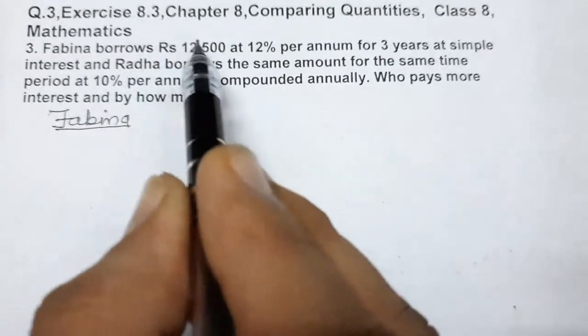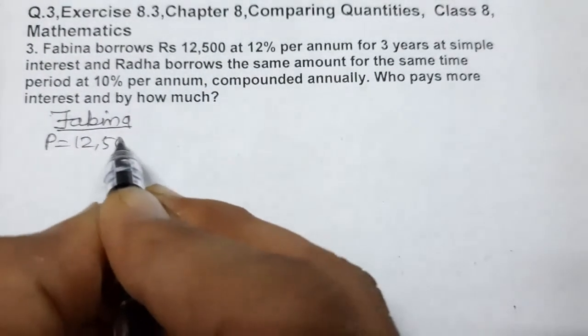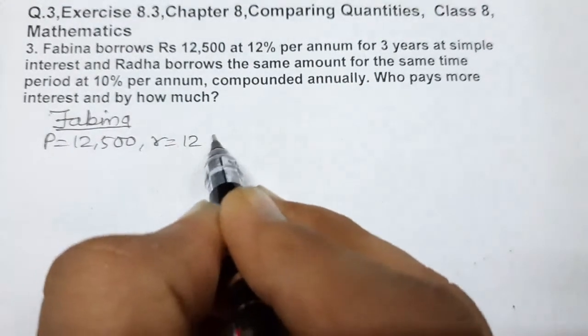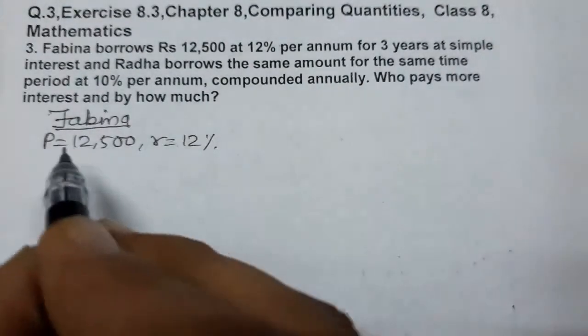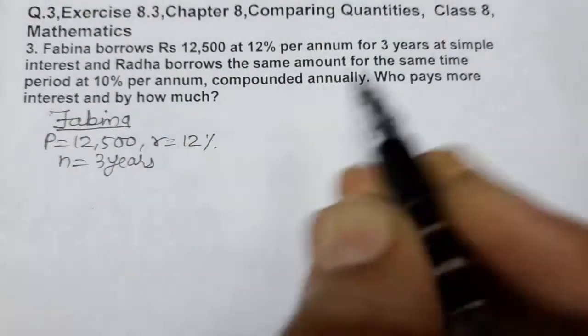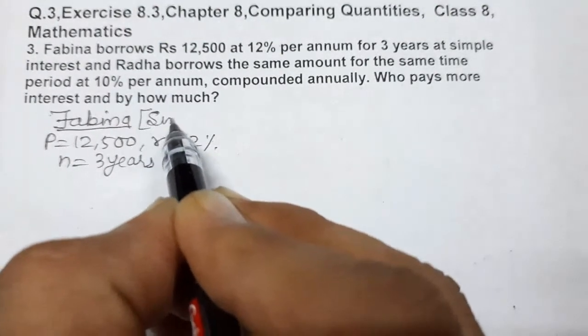Fabina borrows, so principal equals 12,500, rate equals 12%, and time equals 3 years. She borrowed money at simple interest.